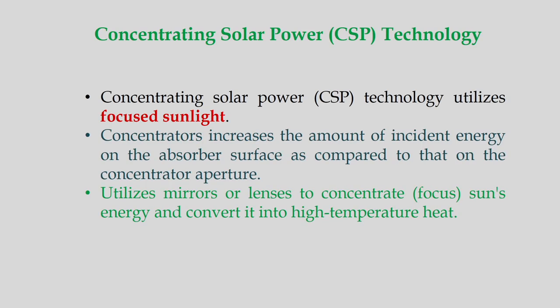What is concentrating solar power technology? This concentrating solar power technology utilizes focused sunlight. The concentrators increase the amount of incident energy on the absorber surface as compared to that on the concentrator aperture. CSP technology utilizes mirrors or lenses to concentrate the sun's energy and convert it into high-temperature heat.